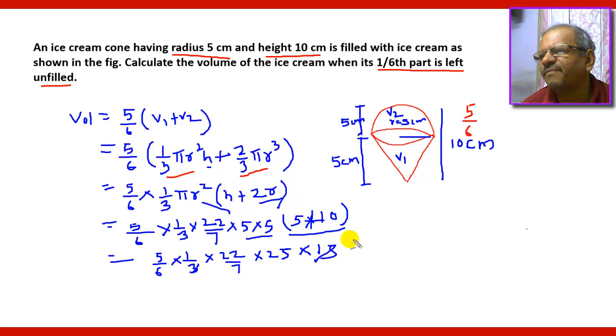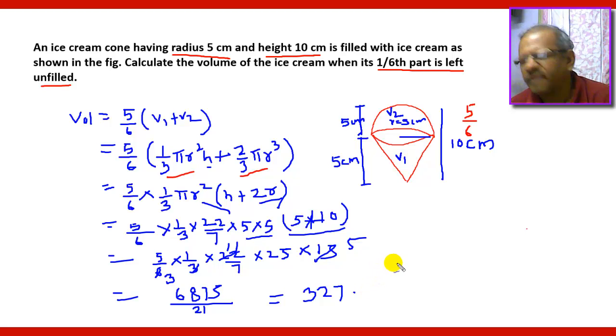So three fives are 15, two threes are 6, two ones are 2, and you will get 5 multiplied by 11 multiplied by 25 multiplied by 5. If you multiply all these things you get six thousand eight hundred and seventy five upon seven threes are 21, so that gives you 327.38 cubic centimeter.